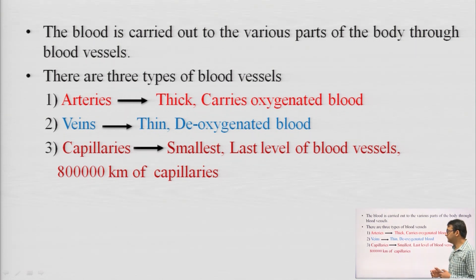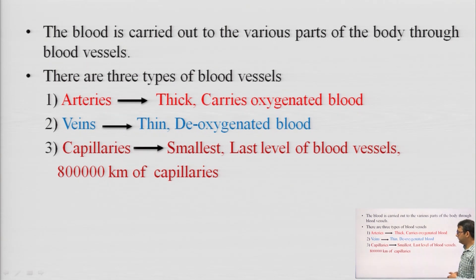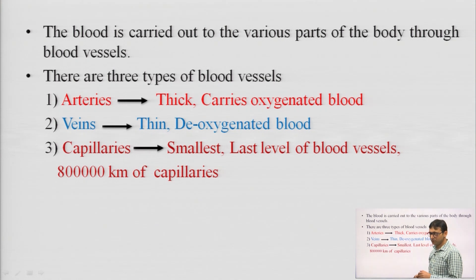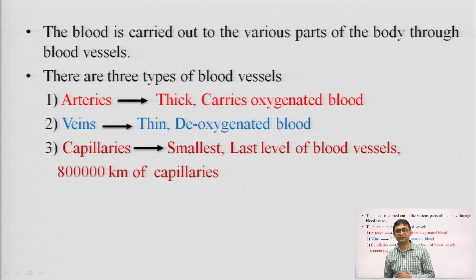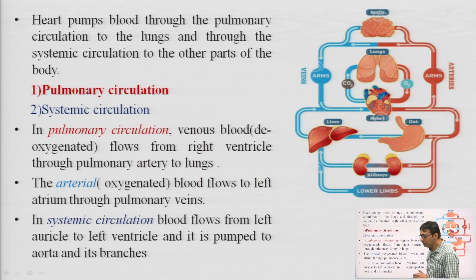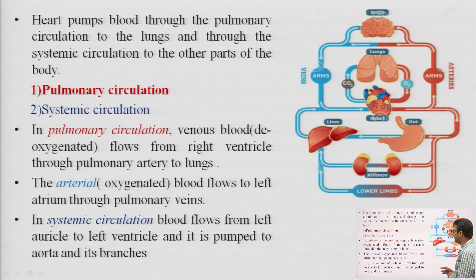Now coming to basic anatomy and physiology of the body. The human body consists of various subsystems: one is the cardiovascular system, the respiratory system, the biochemical system, the nervous system, and many other subsystems responsible for the working of the entire body. We are not going to discuss every system, but we will discuss a few systems for which we generally design instruments used in daily life.